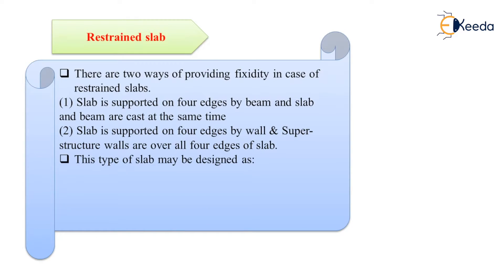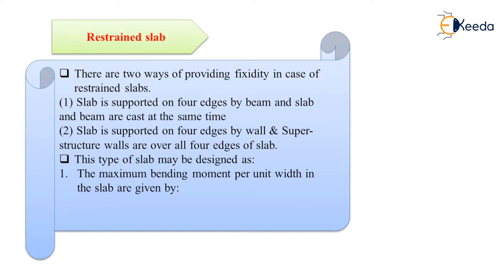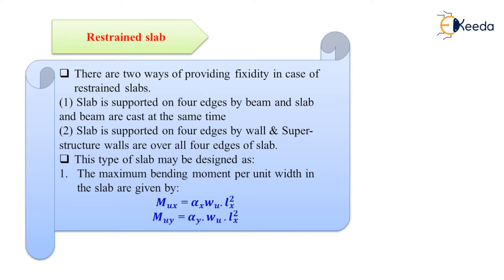When the corners of a slab are prevented from lifting, that is a restrained slab, it may be designed as specified. The maximum bending moment per unit width can be calculated by formula. Since we are dealing with bending in both directions — shorter and longer — we calculate MUX and MUY. MUX equals alpha X × WU × LX², and MUY equals alpha Y × WU × LX².